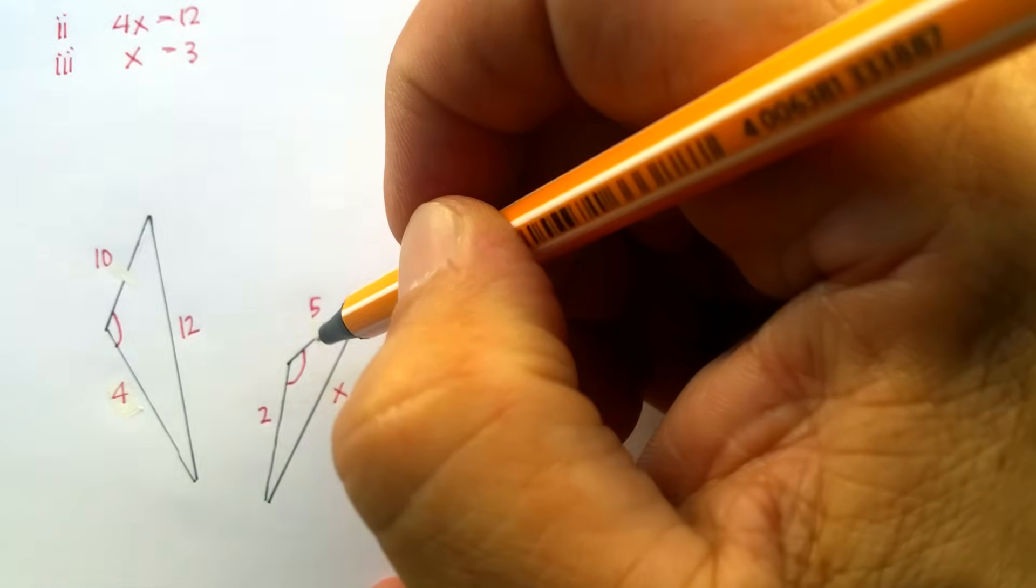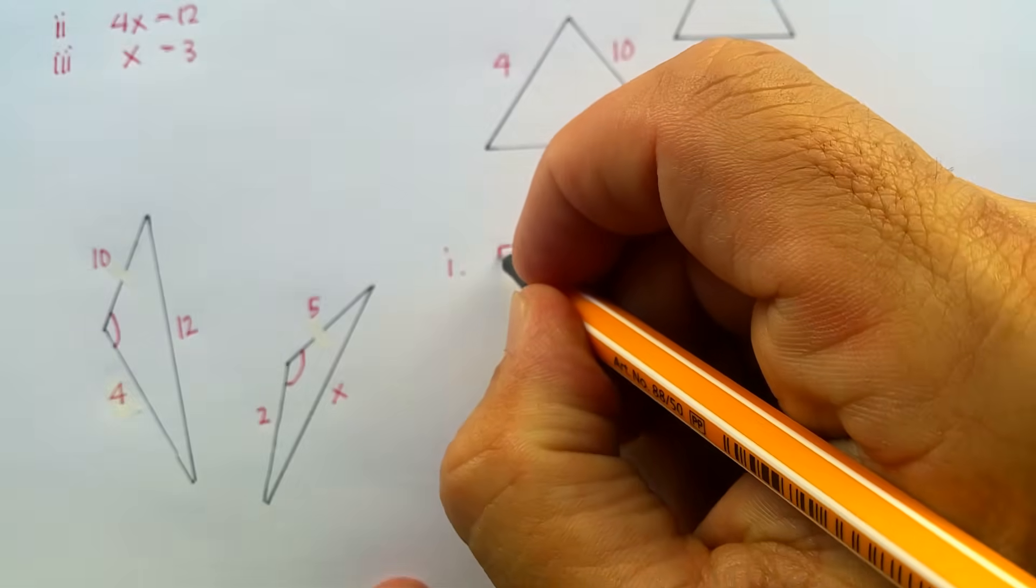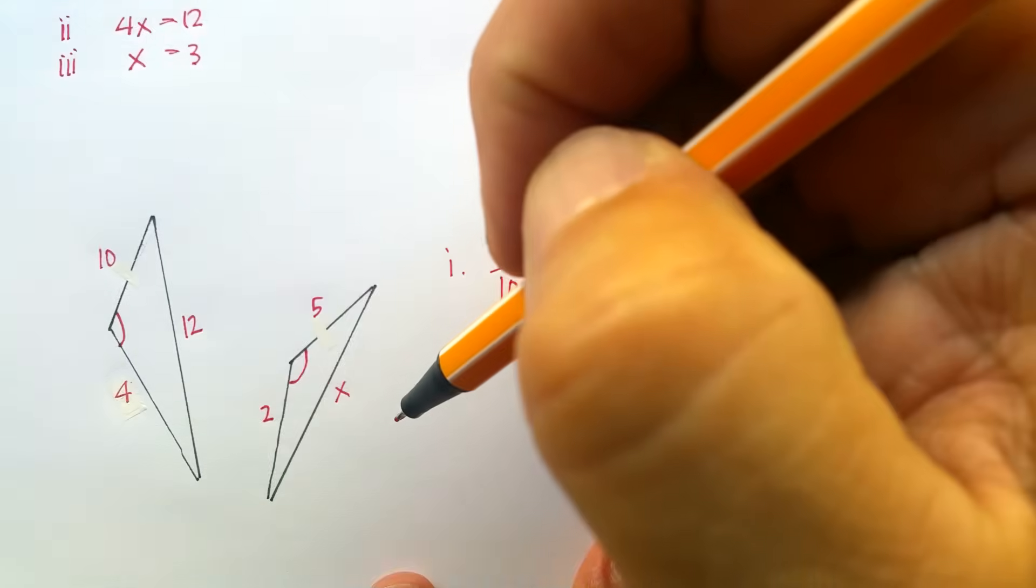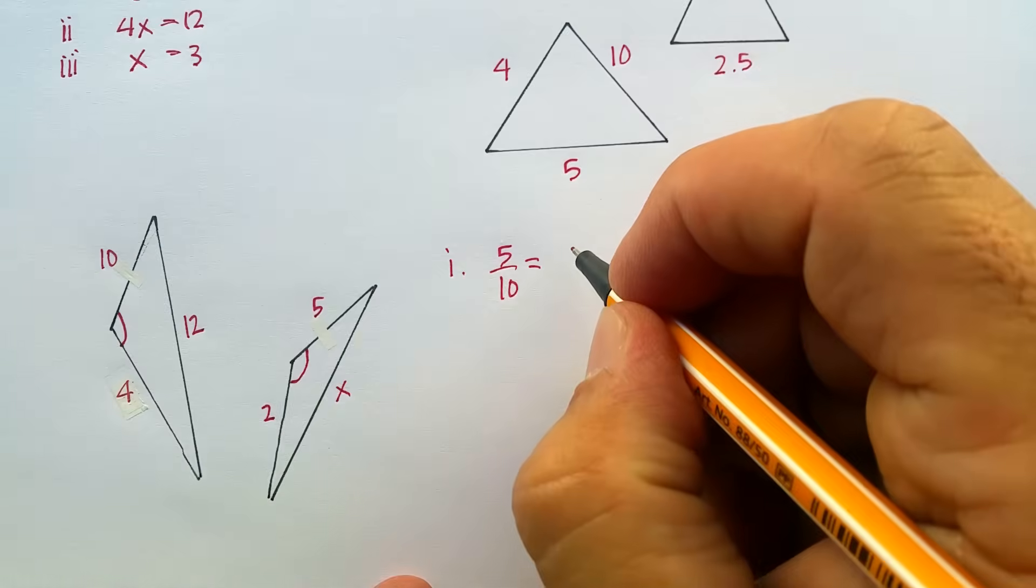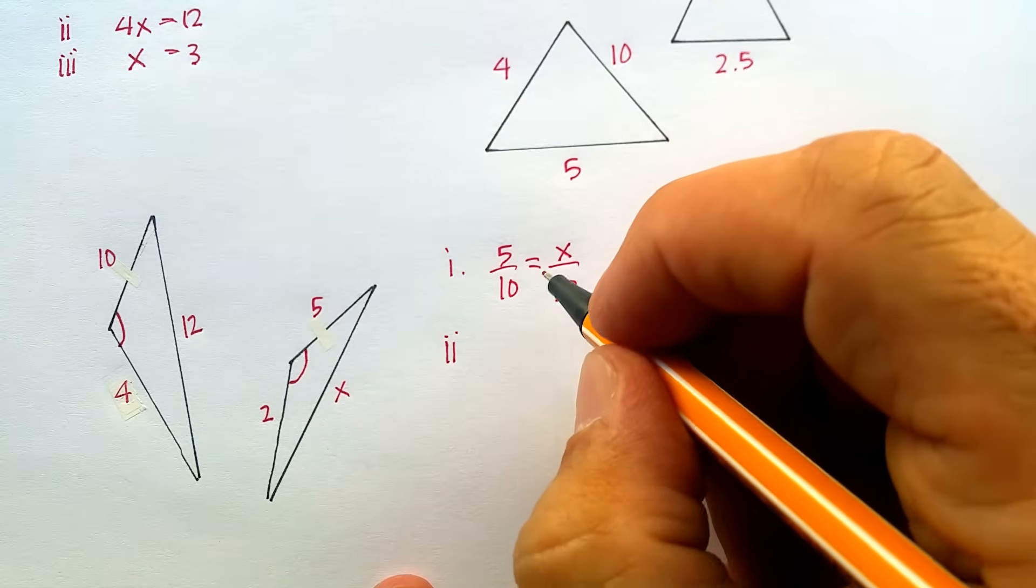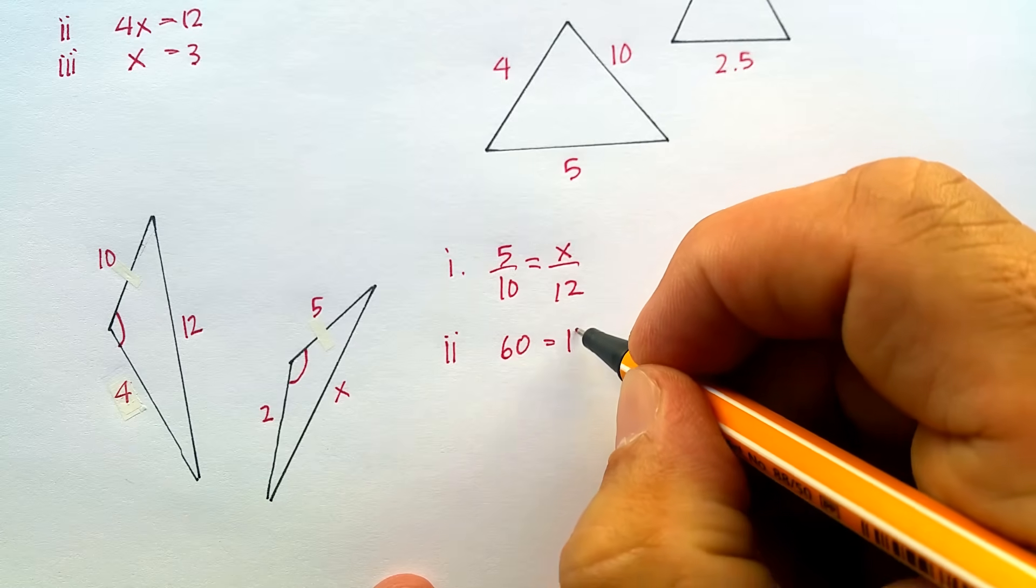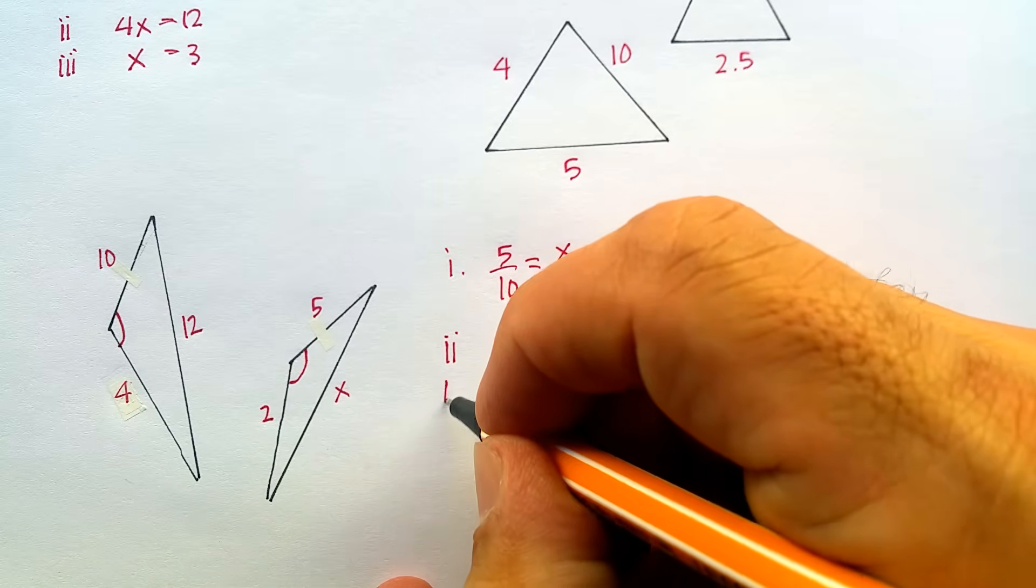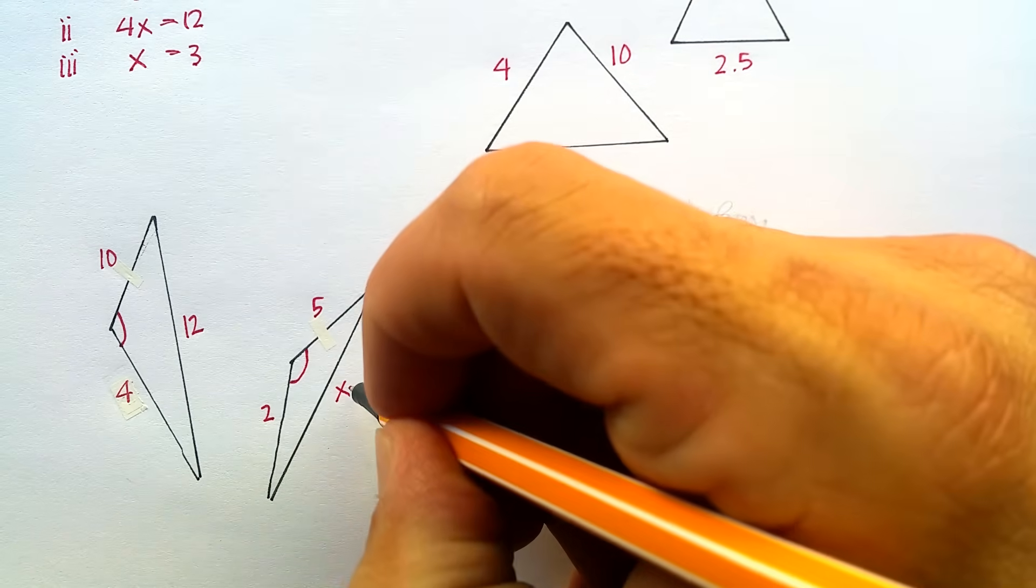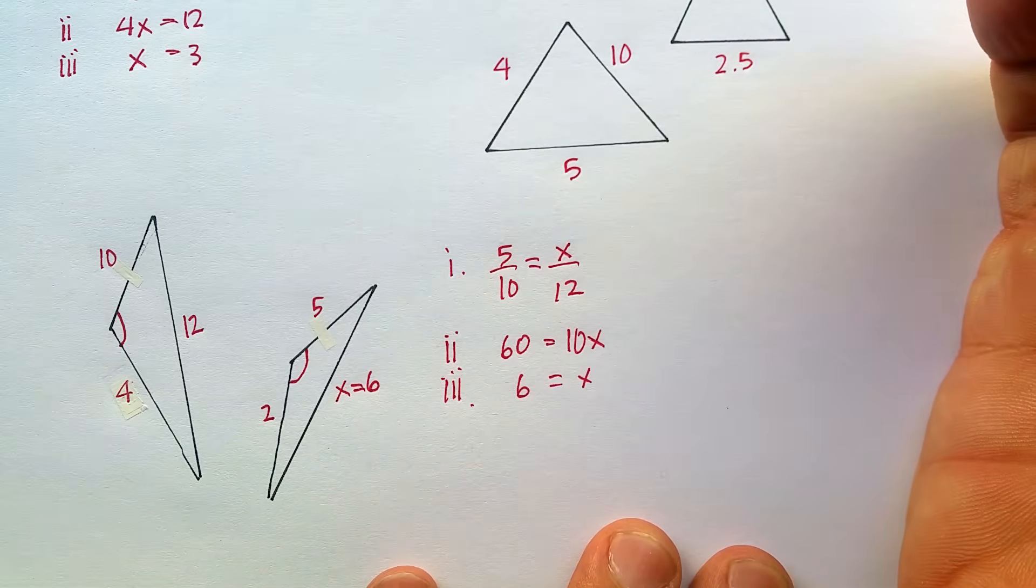5 is to 10 as x is to 12. Again, corresponding sides. Let's go ahead and do cross products. I get that 60. 10 times x is 10x. Divide by 10. And I get 6 is equal to x. And I just discovered that this side is actually 6.